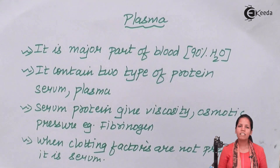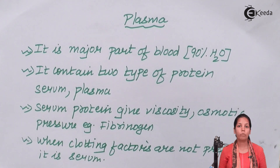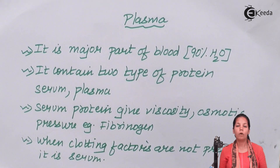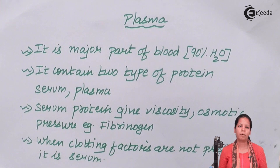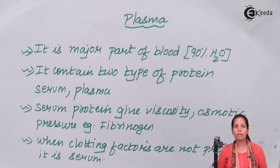This plasma consists of 90 percent water and approximately 7 to 8 percent plasma proteins. These plasma proteins can be of two different types: one is serum proteins and another is plasma proteins. Serum and plasma are the two different protein fractions associated with it.